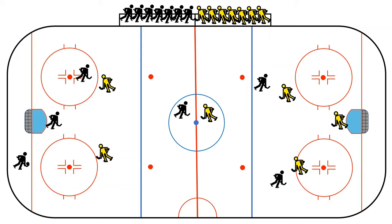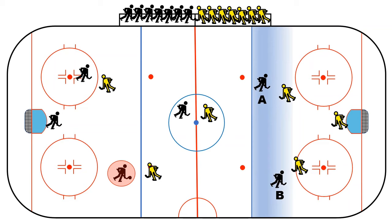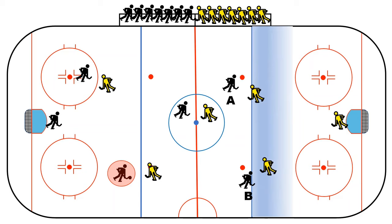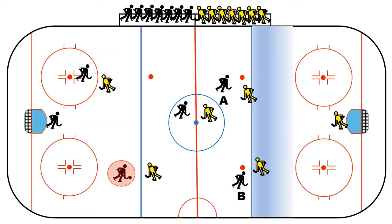Why do we have offside and icing? That is to make the game more dynamic. For example, a player can pass to teammates, but because of offside, players A and B must stay behind the blue line until the puck crosses it. The whole reason for offside and icing is to keep all players in the same area and make the game much more fun.